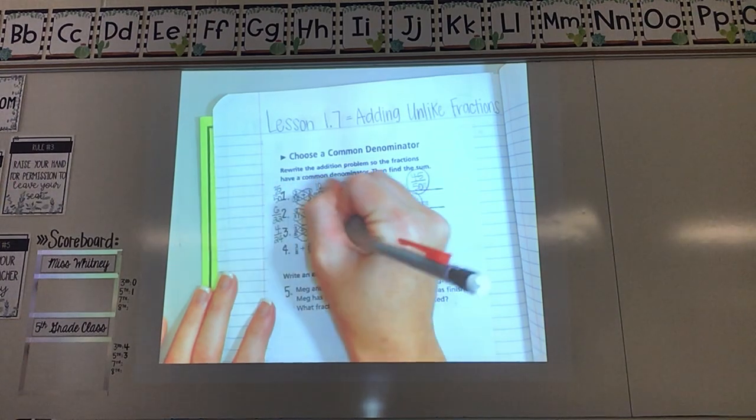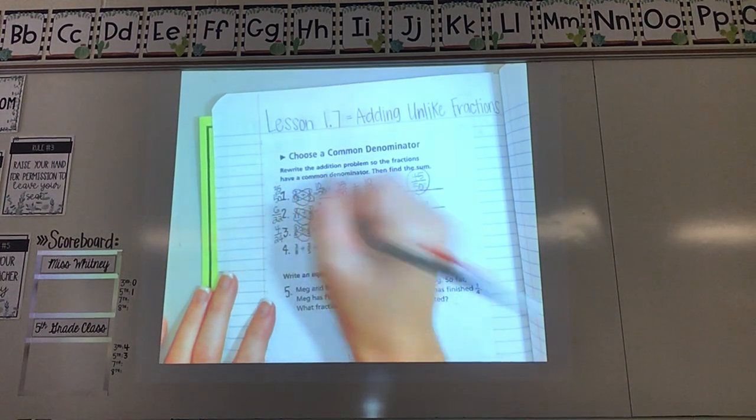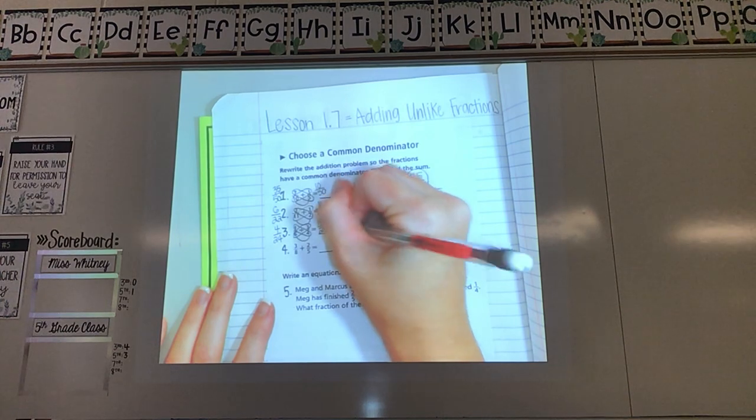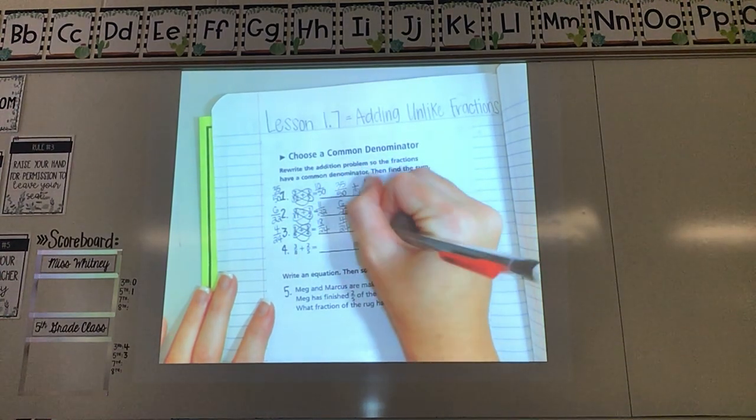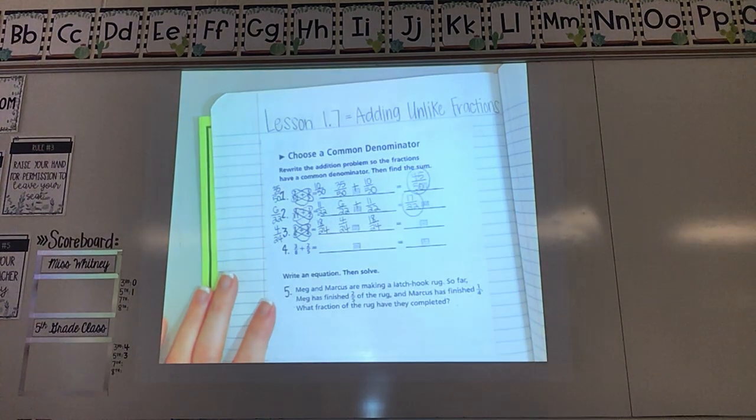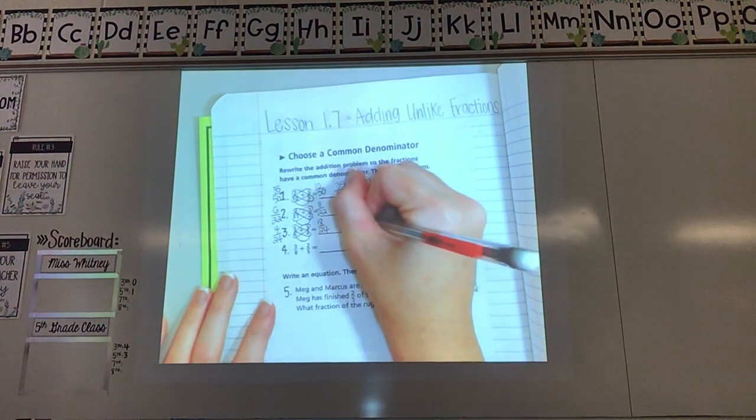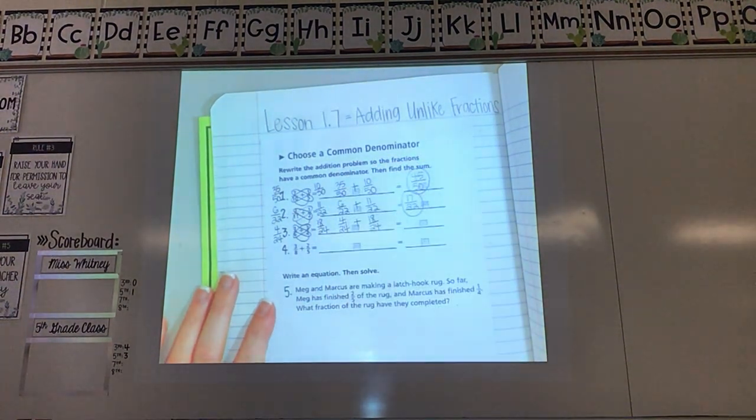6 and 4 is 24. So I'm going to add that underneath both of these numbers that I just got. Copy down my fractions. I got 4 twenty-fourths and 18 twenty-fourths. What are they asking me to do with those fractions? Add.